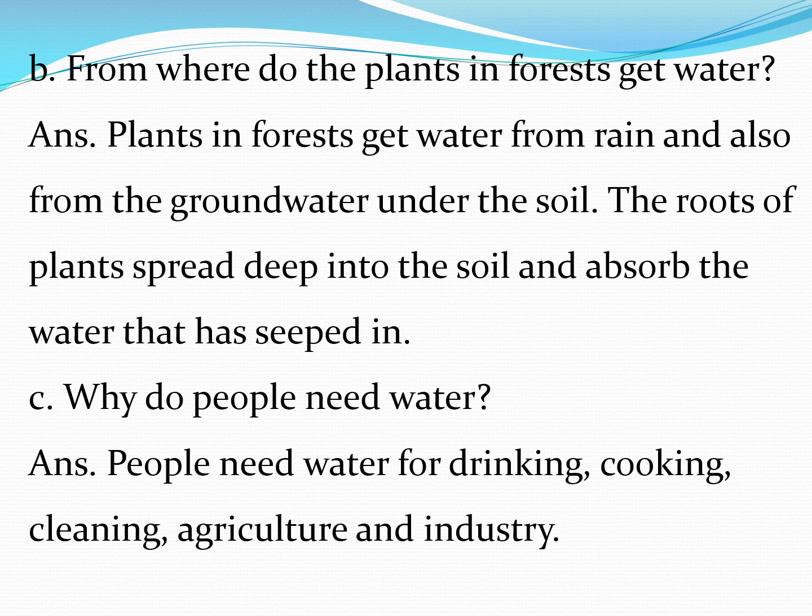From where do the plants in the forest get water? Plants in forests get water from rain and also from the ground water under the soil. The roots of plants spread deep into the soil and absorb the water that has seeped in. Why do people need water? People need water for drinking, cooking, cleaning, agriculture and industry.